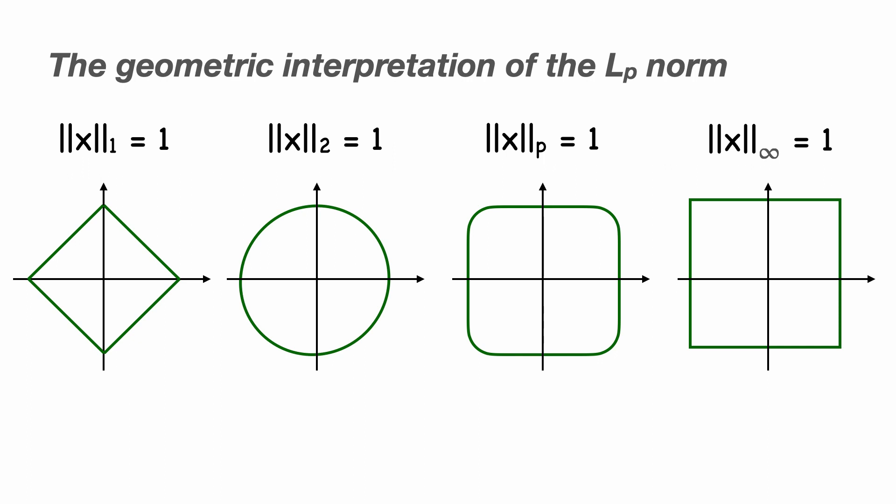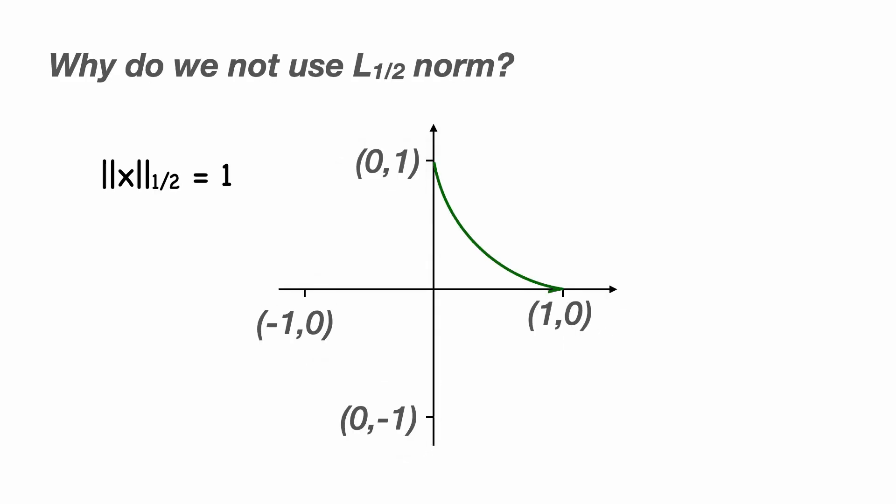But why is this so important that it's shown in almost every lecture about norms? Answering this question also gives a good reason why we only use LP norms where P is greater than or equal to 1 and not, for example, an L1 half norm.